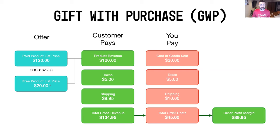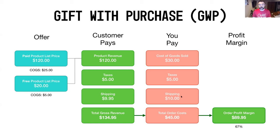In the gift with purchase scenario, you're selling the standard product at full price but adding a lower-value free product — say a $20 item with a COGS of $5. The customer is still paying you around $135, same as before. But because the free item is smaller, the COGS is lower and shipping may be lower too since you can throw it in the same box, reducing total order cost versus the BOGO.